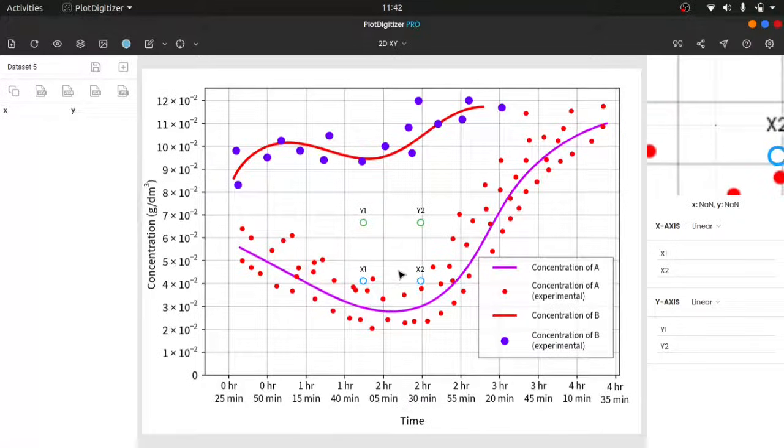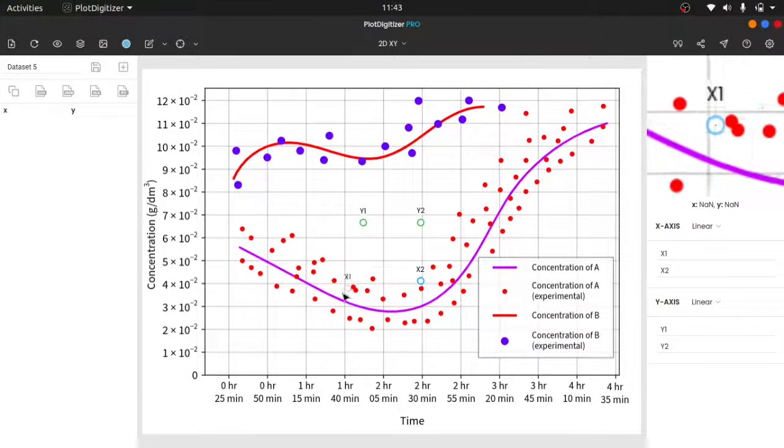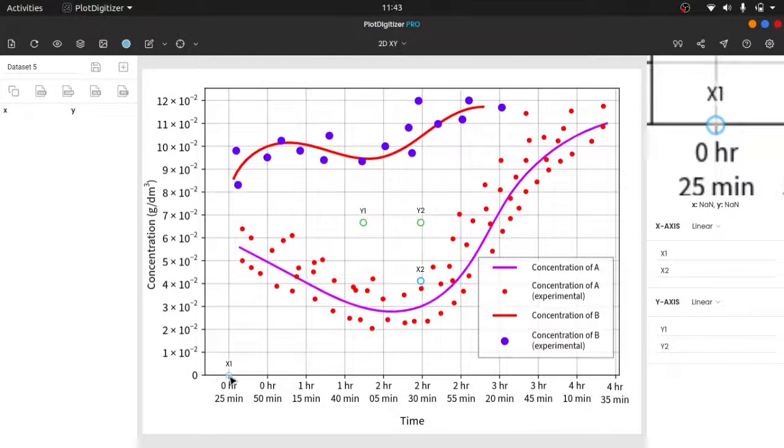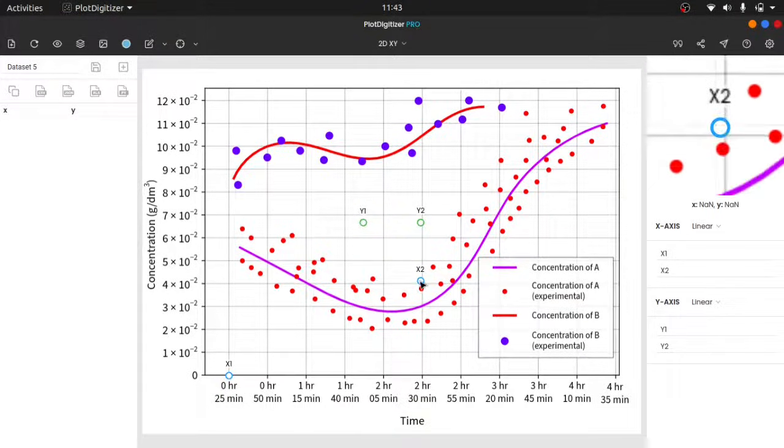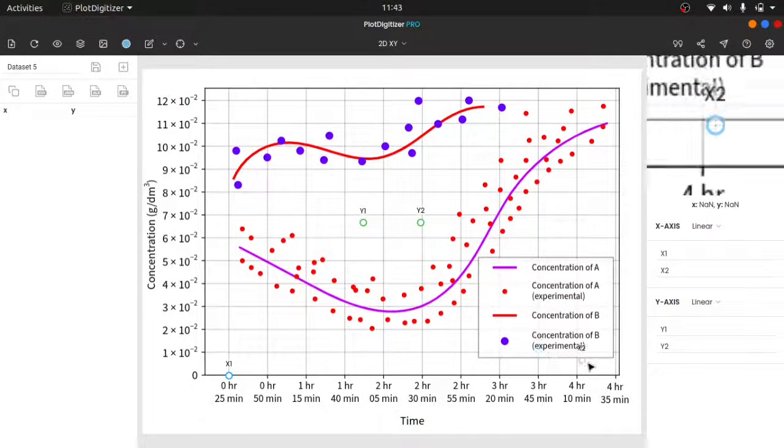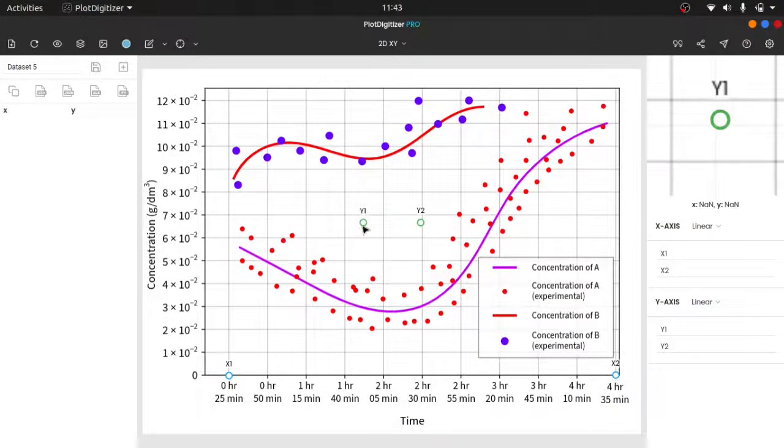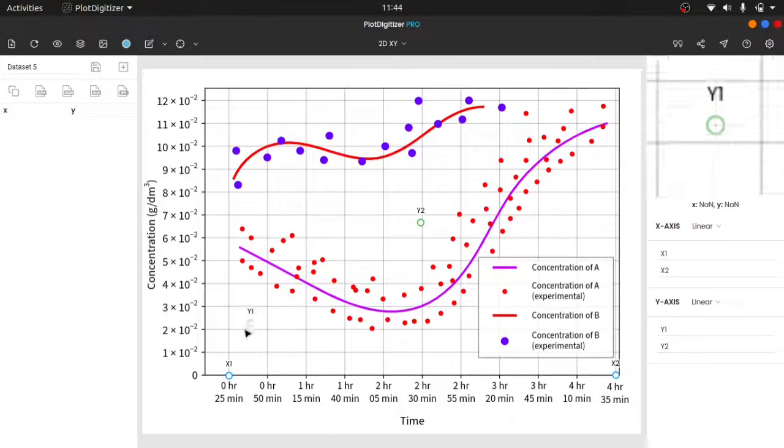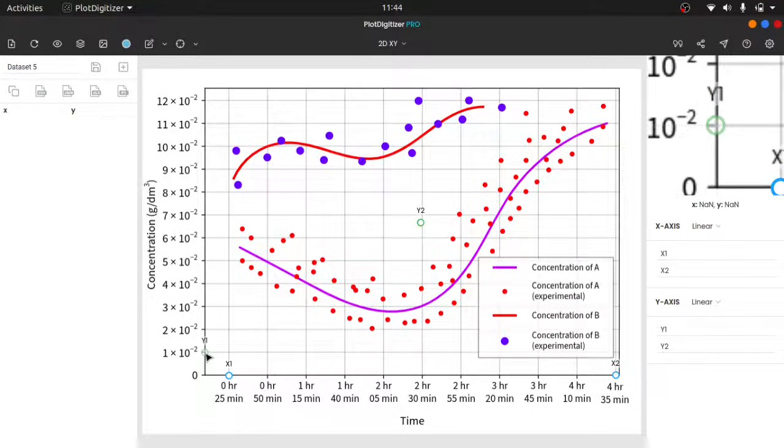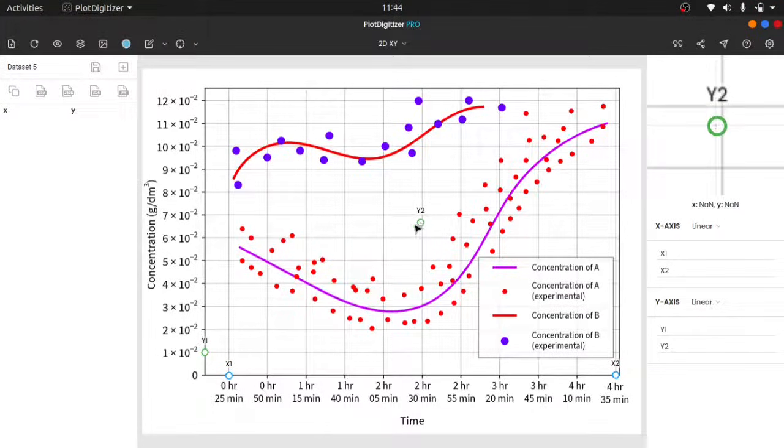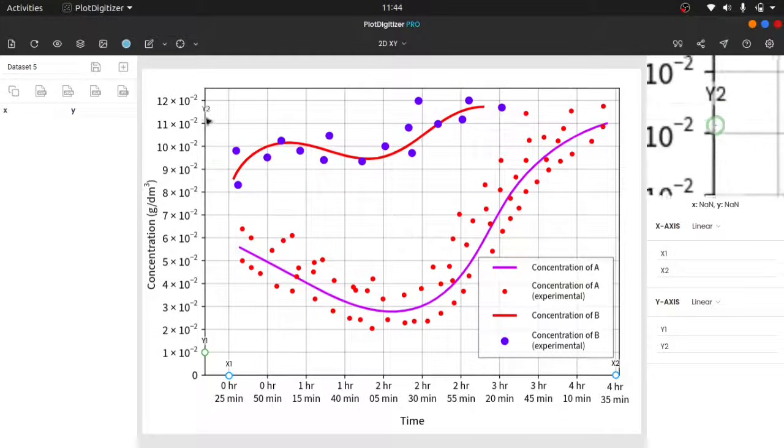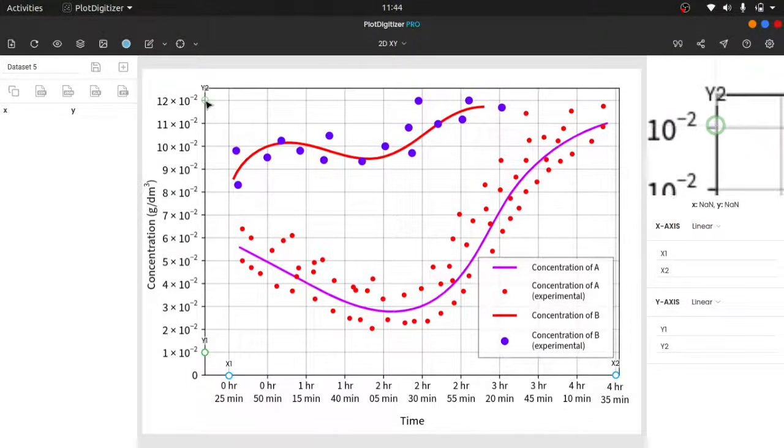First, we have to calibrate this graph. Move the calibration markers X1 and X2 to two different positions where we know X coordinates, and the same for Y1 and Y2. Use the zoom panel while dragging and dropping the markers.